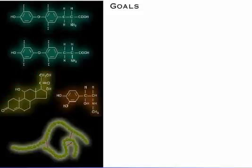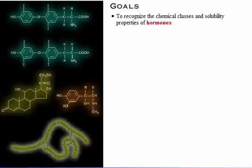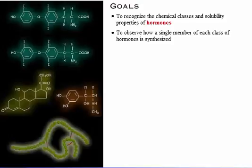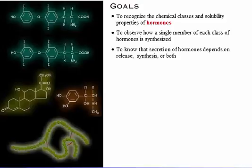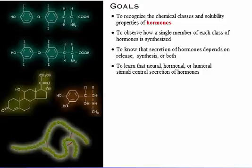Your goals for learning are: to recognize the chemical classes and solubility properties of hormones; to observe how a single member of each class of hormones is synthesized; to know that secretion of hormones depends on release, synthesis, or both; and to learn that neural, hormonal, or humoral stimuli control secretion of hormones.